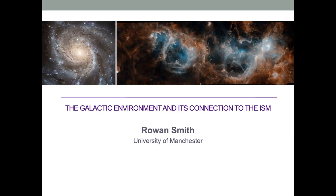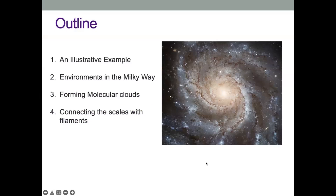So a quick outline of the talk. I'm going to start off with an illustrative example, which will show you many of the processes important in the cold interstellar medium and why they are connected to the structure of the galaxy. Then I'll look at a brief census of the different types of environment in our Milky Way, at which point we'll have a short break for questions. Then we'll look at how gas accumulates into cold dense gas in galaxies to form molecular clouds, and we'll end up looking at how the different scales are connected through filamentary structure.